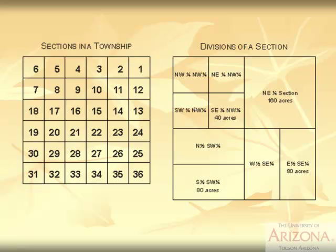Looking at the section numbering system, we always start with number one in the furthest northeast corner and work through in a serpentine pattern. When describing land, we start with the smallest unit. For example, this section here — we draw imaginary lines north-south and east-west and describe it as the northeast quarter of the northwest quarter, because it is northeast of that area and northwest of the larger block.